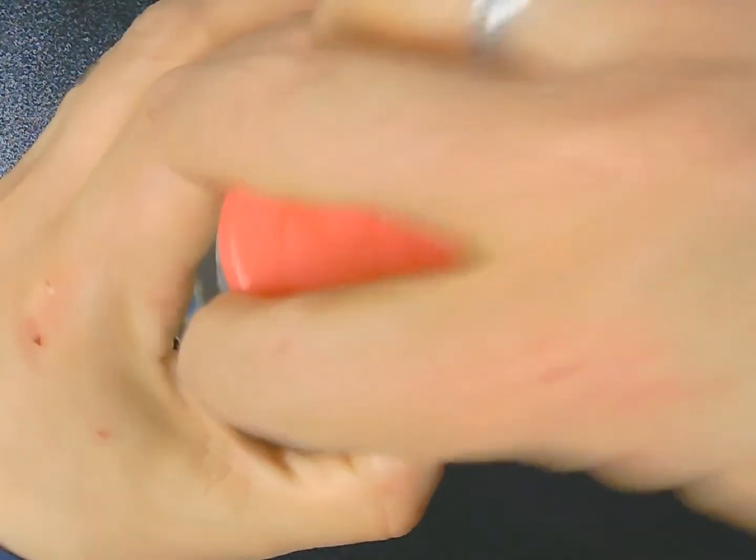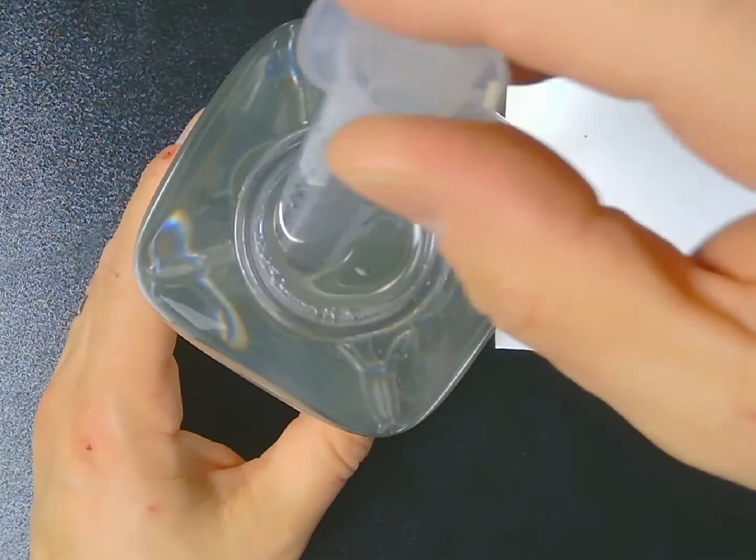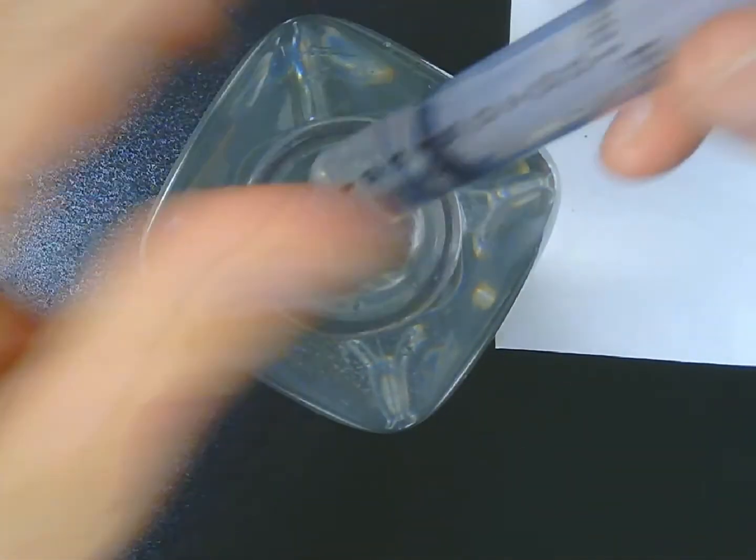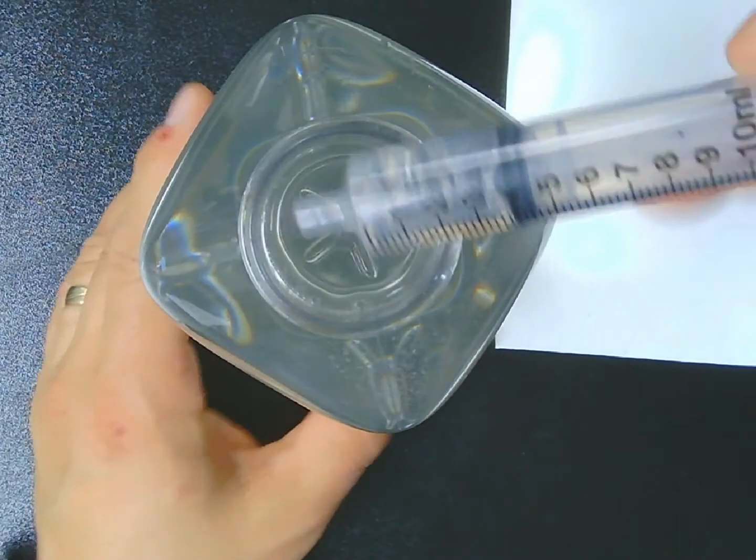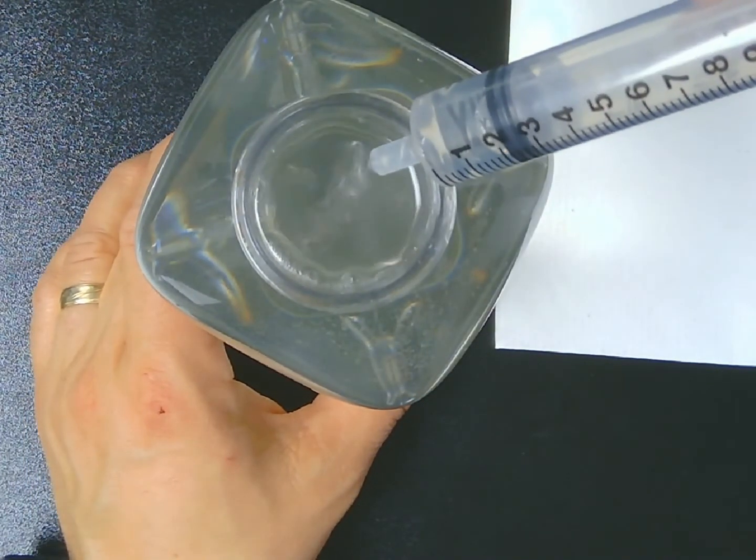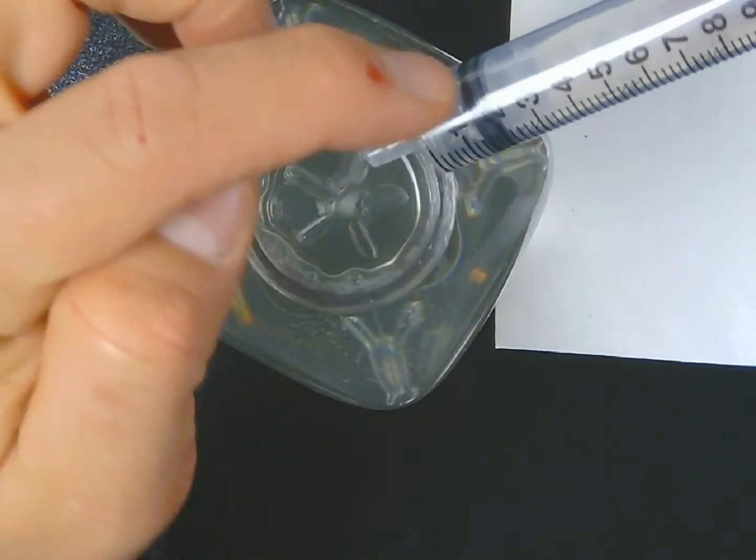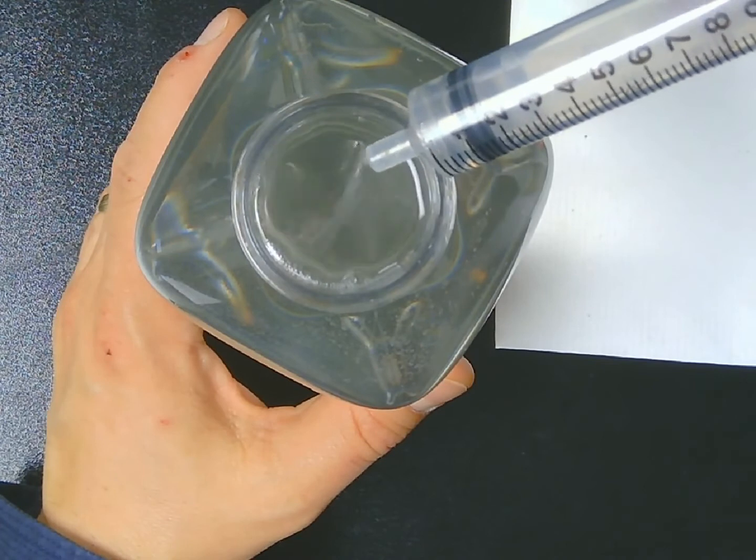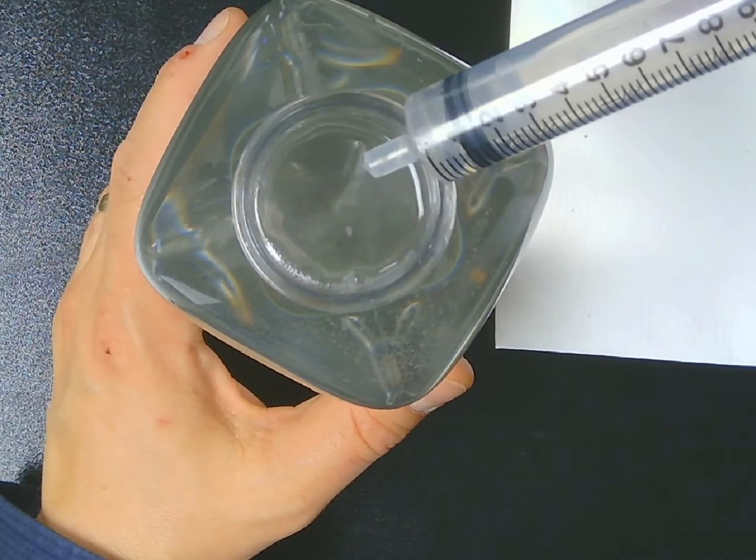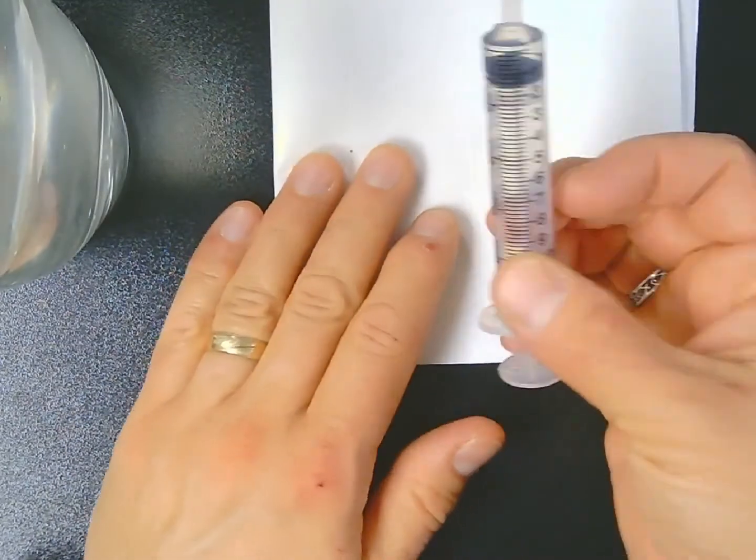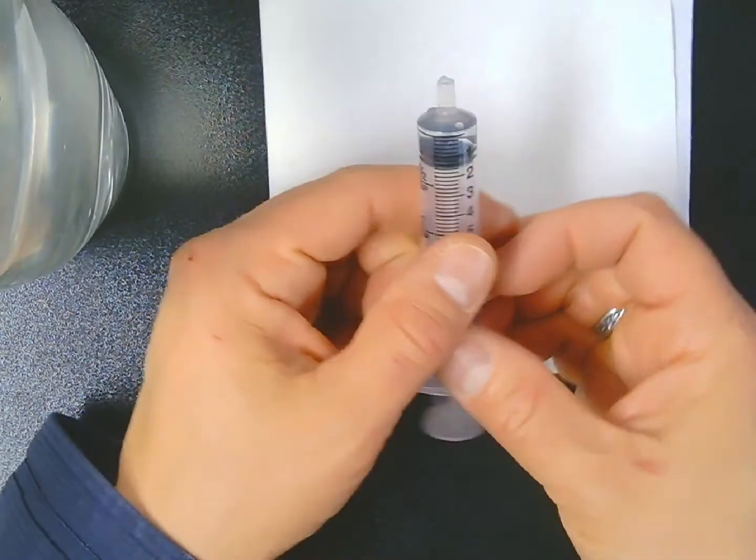So if I want to measure out a milliliter, what I would do is I would take this syringe and I would just submerge it into this container a little bit and draw on the plunger like so. I drew out about three milliliters, and I'm going to return some of that volume back into the container until I get exactly one milliliter. That rubber gasket at the top of the plunger of my syringe, I'm going to line it up with that hash mark that's marked by the one. That is one milliliter of liquid.